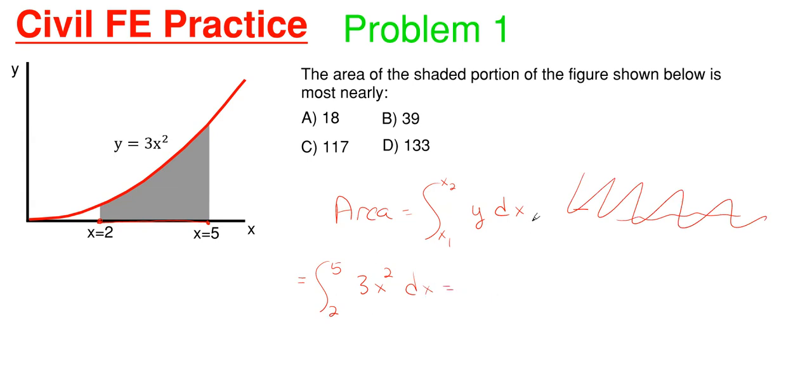So we basically are integrating 3x squared, which is pretty easy integration. That would just be 3 times 1 third x to the third from 2 to 5. So this is essentially just x cubed from 2 to 5. So we would have 5 cubed subtracting off 2 cubed, not squared, but cubed. And that would give us a value of 117. So that means our answer for this first problem is c.